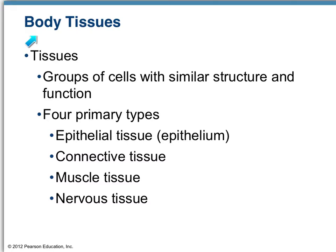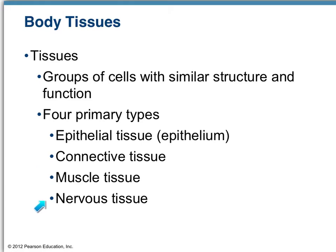There are four main types of tissue in the human body: epithelial tissue, which is typically referred to as just epithelium; connective tissue; muscle tissue; and nervous tissue.